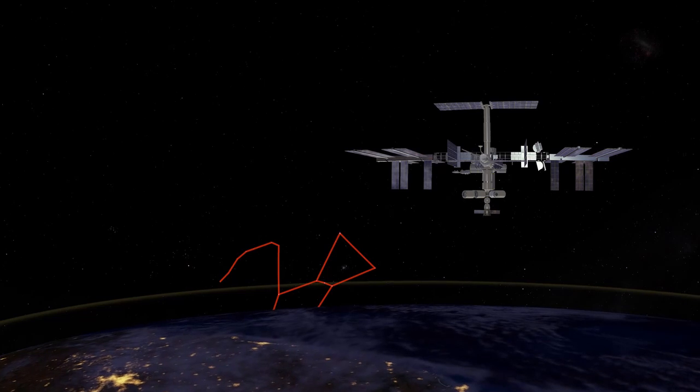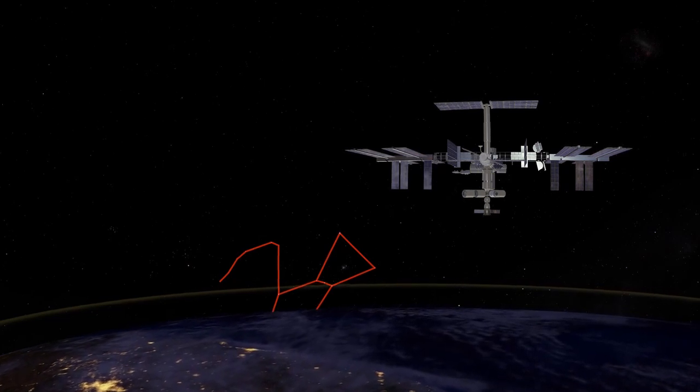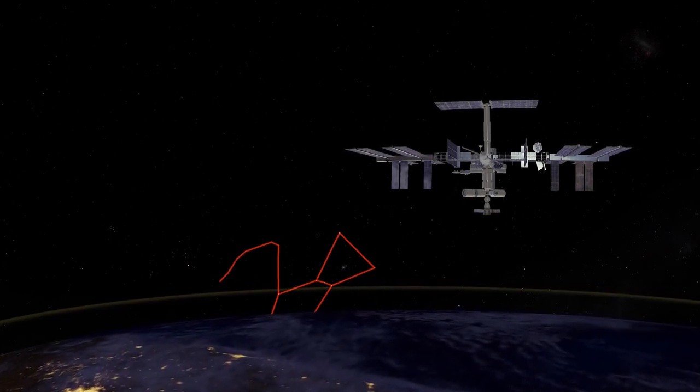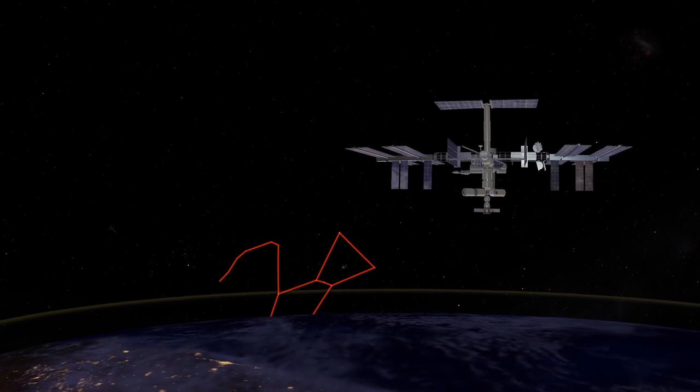The International Space Station goes around the Earth about every 93 minutes, so Orion would rise or set and set every 93 minutes.